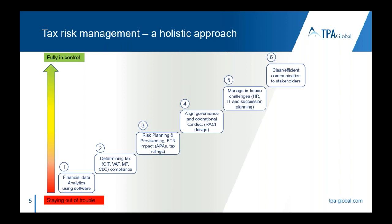Step four is to align your substance and operational conduct, reflected in a RACI design matrix. A RACI matrix shows who within your organization is responsible, accountable, and needs to be consulted or informed. It gives you a good tool to deal efficiently with the amount of responsibilities and work you are confronted with during day-to-day work. Step five is managing in-house challenges — how you have staffed and organized your tax organization and whether you have the right capabilities to deliver.